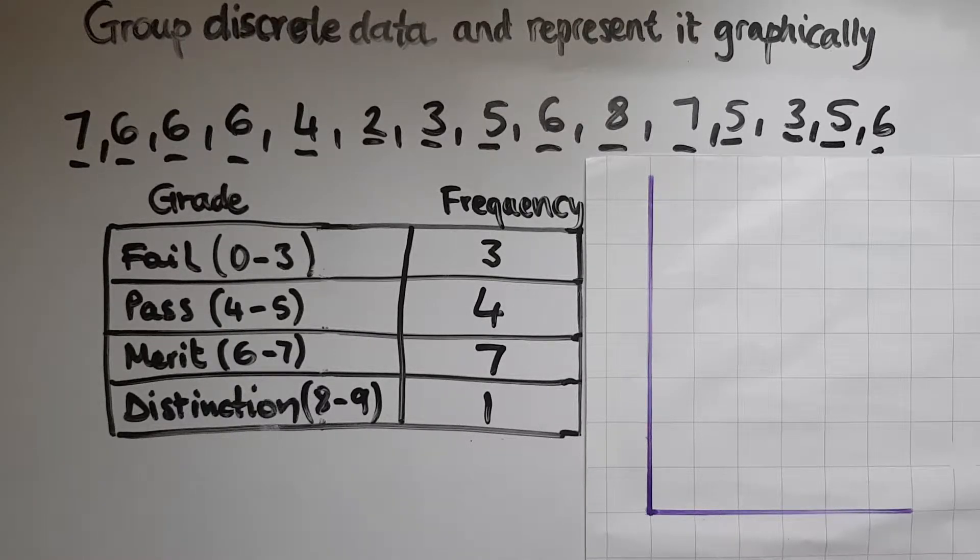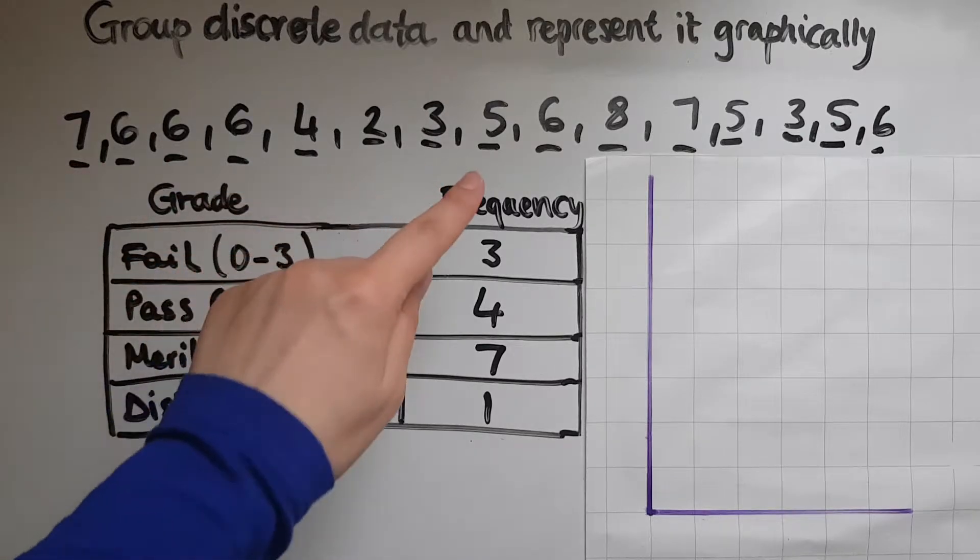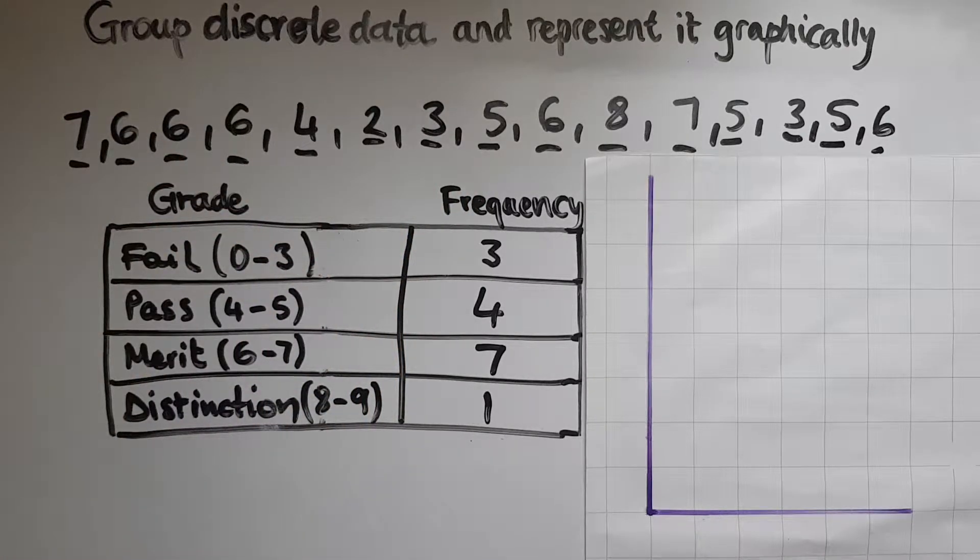Discrete data is different from continuous data in that we don't have numbers like 4.83.